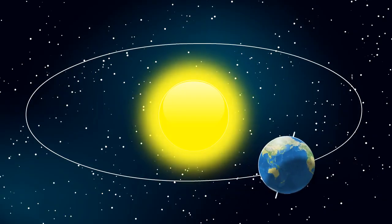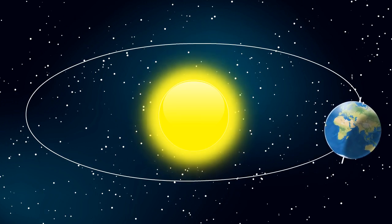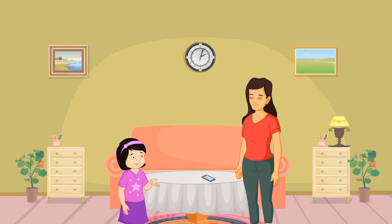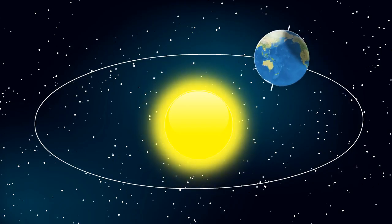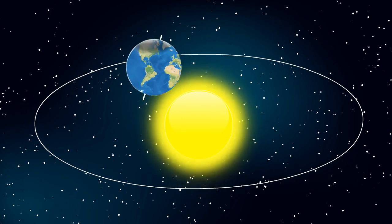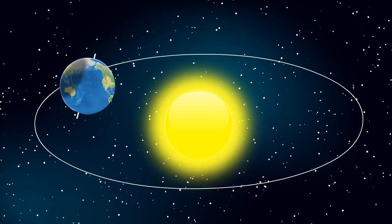Seasons are caused due to the Earth's revolution around the Sun and the tilt in its axis. This sounds so interesting. Please tell me more about it. As the Earth revolves around the Sun, its tilted axis always points in the same direction.